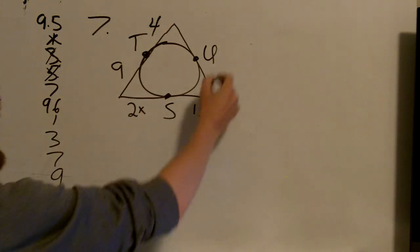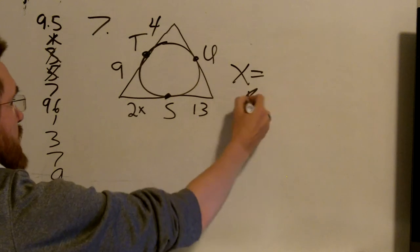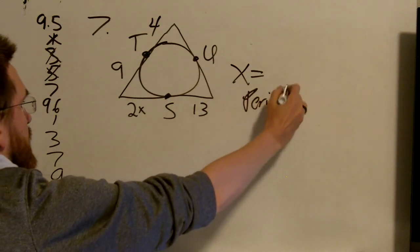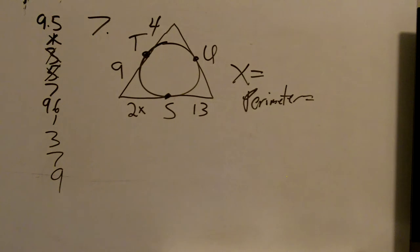So I want to know what x equals. And I want to know what the perimeter equals. So I want two answers for this problem.